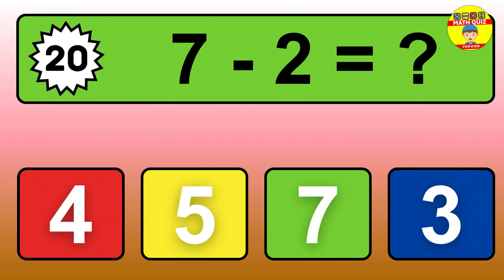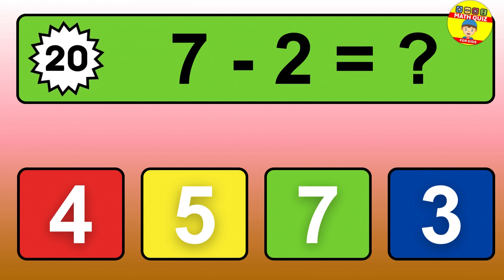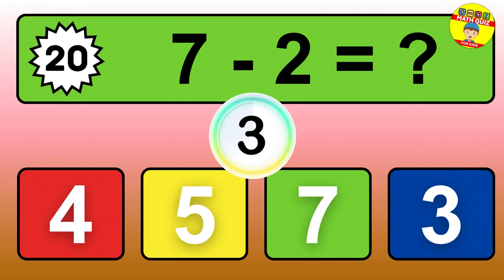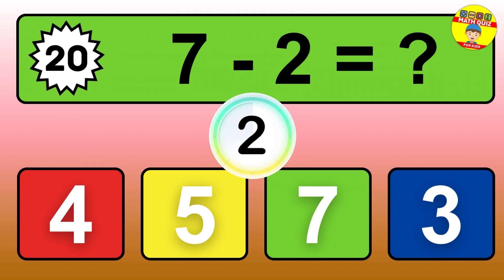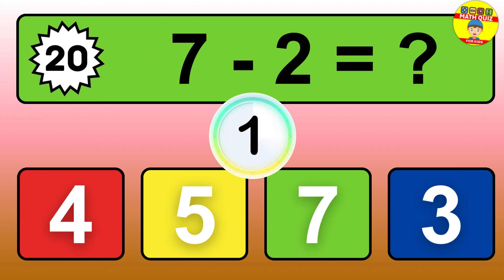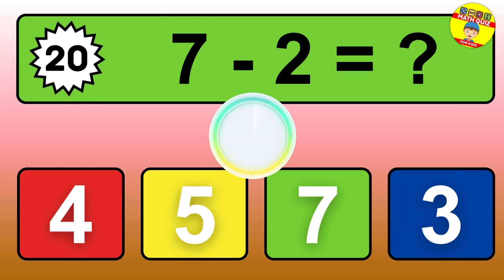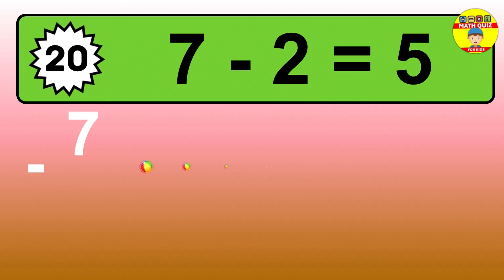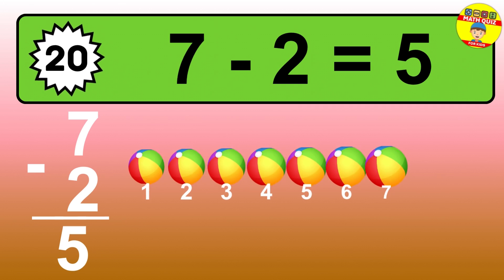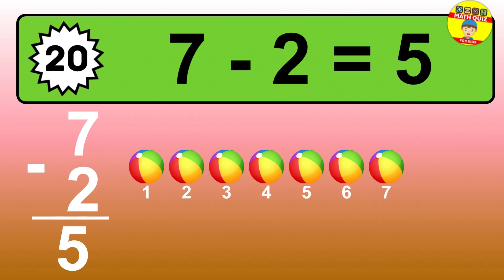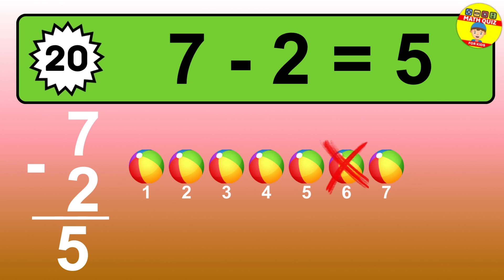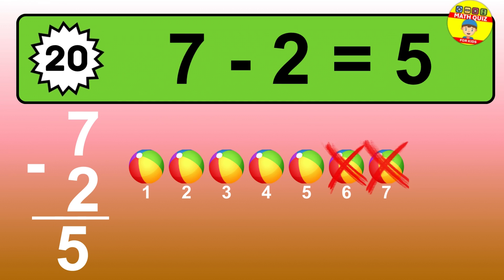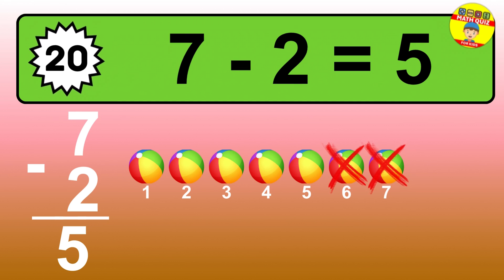Question twenty: seven minus two equals what? So the answer is, seven minus two is five. Let's count it. One, two, three, four, five.